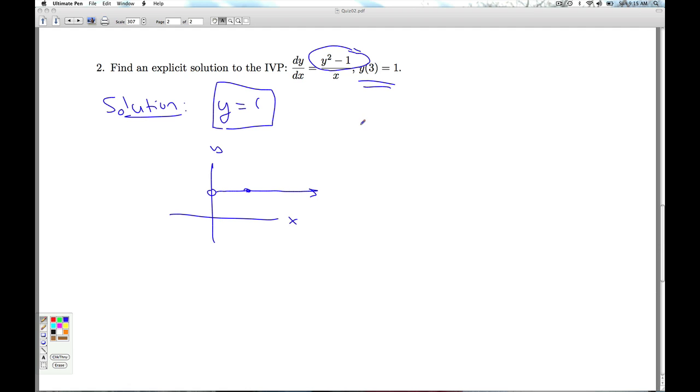As soon as you realize y equals one is a solution and the existence and uniqueness theorem applies, then y equals one is the only solution to this initial value problem. So, there's some lessons and morals in there. It's too early on Sunday for me to actually articulate those correctly. I think you get what I'm talking about. But that'll do it for Checkpoint Quiz two.